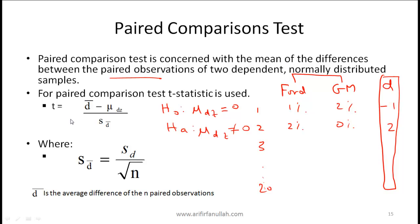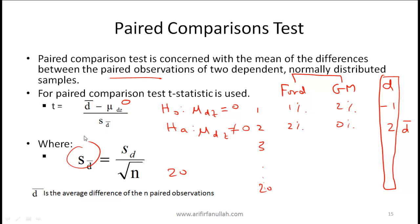The test statistic is d-bar — the average of all the differences from your 20-month sample — minus mu-dz (which is zero under the null), divided by s-d-bar. Here, s-d-bar is the standard deviation of those differences divided by the square root of n, which in this example is 20. Plugging that in gives you the t-statistic.